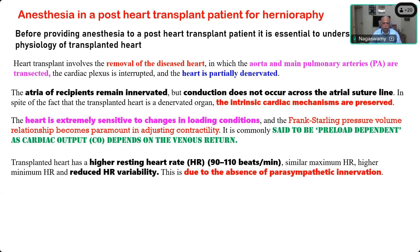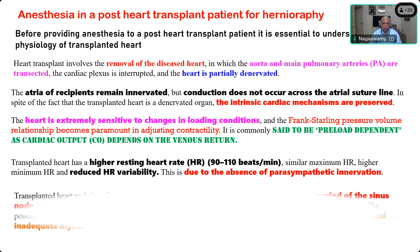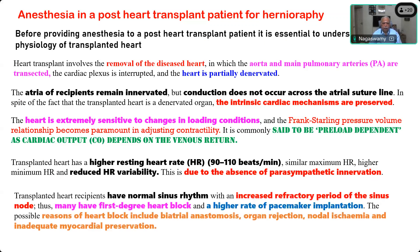Venous return is very important, and the heart rate is always higher after transplant — the transplanted heart beats at about 90 to 110 per minute, with reduced heart rate variability. It will not show the normal respiratory sinus arrhythmia changes. Because of the absence of parasympathetic innervation, there may be a normal sinus rhythm but with an increased refractory period of the sinus node. First-degree heart block, i.e., prolongation of the PR interval, is very common, and the majority of patients may also have a pacemaker implanted.